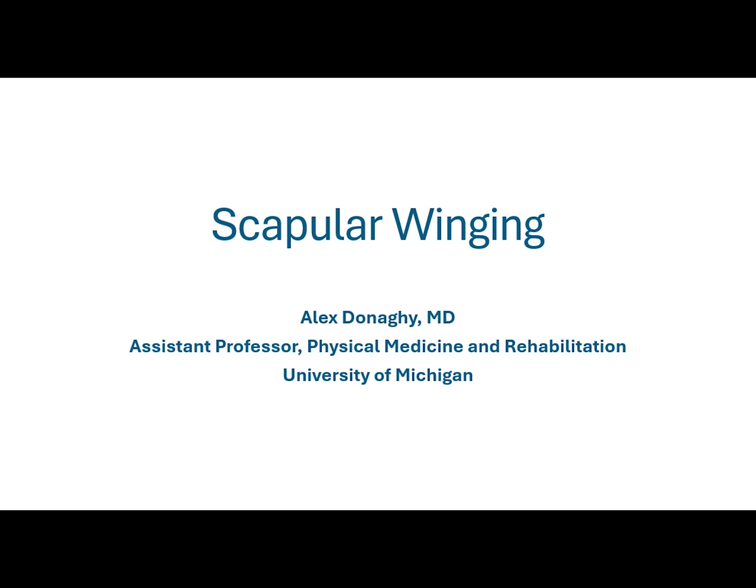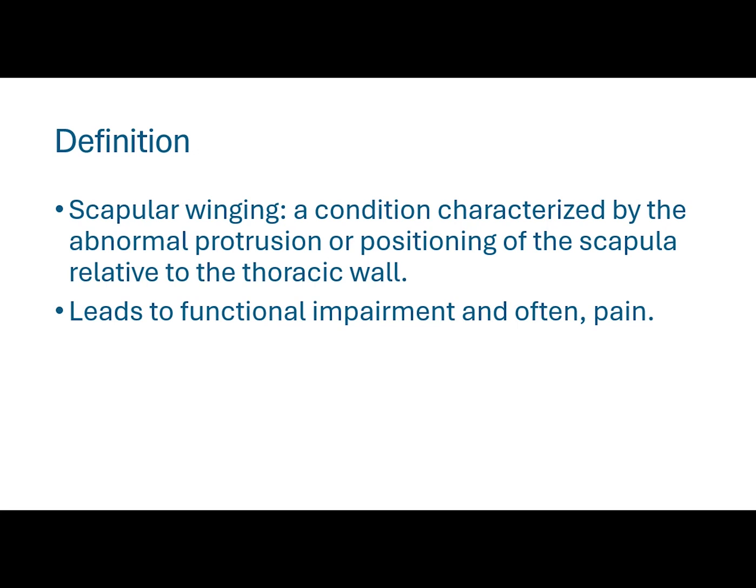Hi, this is Alex Donaghey and we'll be talking about scapular winging. By definition, scapular winging is a condition characterized by the abnormal protrusion or positioning of the scapula relative to the thoracic wall. It can often lead to functional impairment and oftentimes pain.